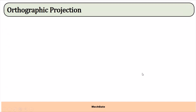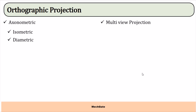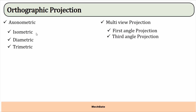Now for orthographic projection, there are various types: axonometric projection, which is a single plane projection, and multi-view projection using multiple plane views. In axonometric projection there are three types: isometric, diametric, and triametric. In multi-view projection there are two types: first angle and third angle projection.